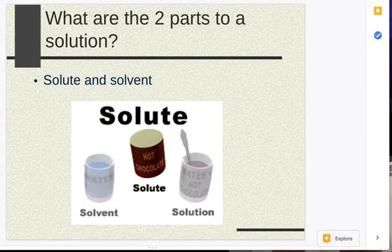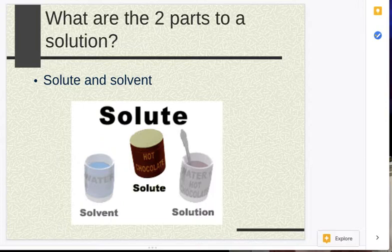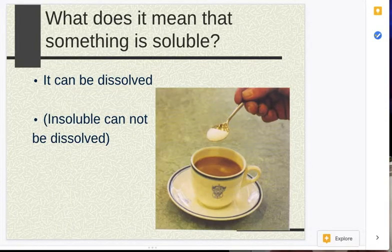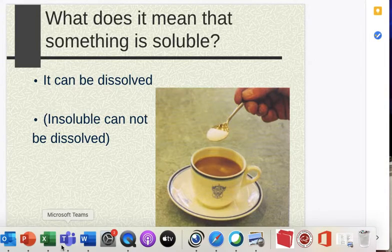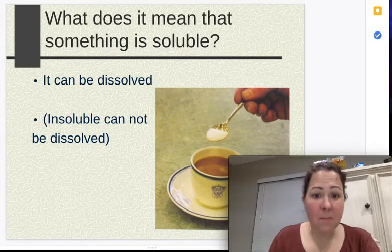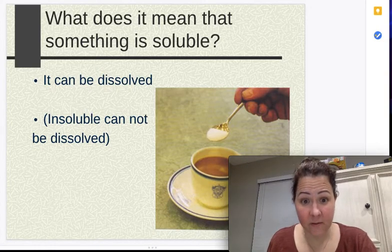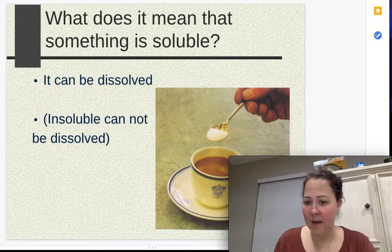The first thing that we need to look at with your solute and solvent is we need to figure out what the word soluble means. When we look at the word soluble, that means it can be dissolved. Insoluble means that it cannot be dissolved.